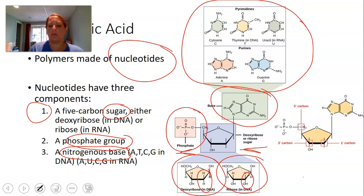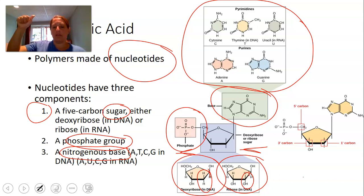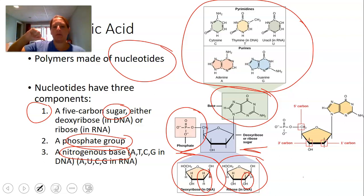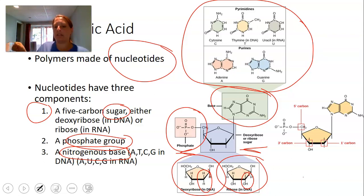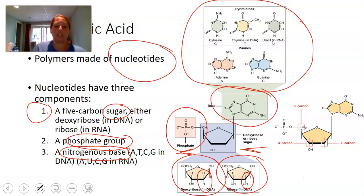To review: a nucleotide is made up of a phosphate group covalently bonded to a sugar, which is bonded to a nitrogenous base. In DNA the sugar is deoxyribose; in RNA it's ribose. DNA's bases are A, T, C, and G; RNA's bases are A, U, C, and G — uracil replaces thymine in RNA.